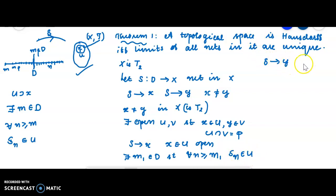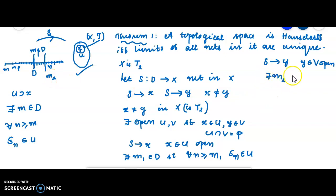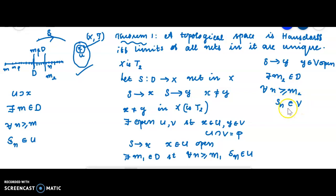Since S converges to Y and V is an open set containing Y, by the definition of convergence there exists M2 in D such that for all N greater than or equal to M2, S(N) is in V. Now M1 and M2 are two points of the directed set D, and since D is directed we can find a point beyond both M1 and M2.